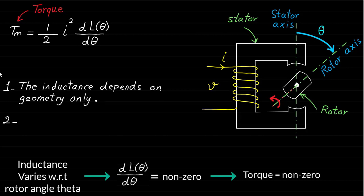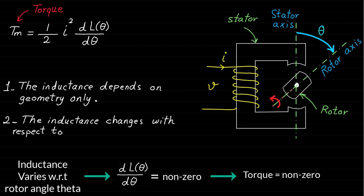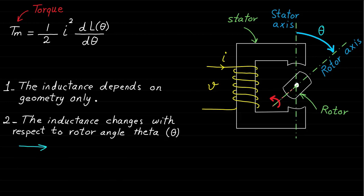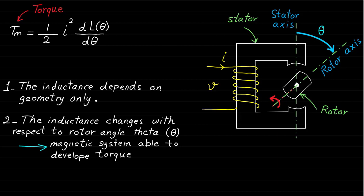The second point is that a single excited rotational motion system is able to develop torque only if the inductance changes with respect to rotor angle theta. In other words, if the inductance changes with respect to the rotor angle theta, the system is able to develop torque because the derivative dL(θ)/dθ will be non-zero.